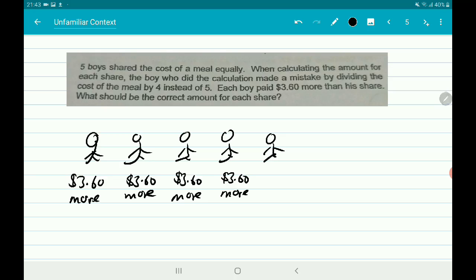So what should be the correct amounts for each share? Now if you look at the diagram, the 4 boys are paying $3.60 more. But is this money supposed to be paid by each of them? No, they are not supposed to be paying this extra money.